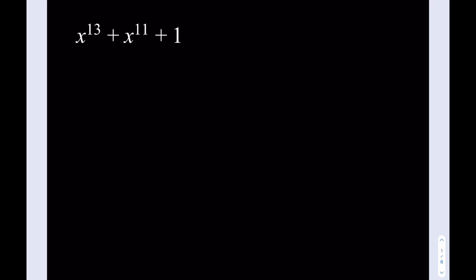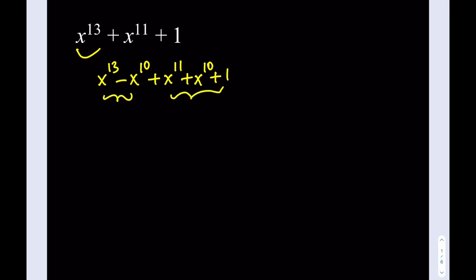I'm going to start by manipulating the x to the power 13. I'm going to write it as x to the power 13 minus x to the power 10. Obviously we don't have x to the 10th power, so we're just going to have to add that one back. So I'll end up with something like this — I have to add back x to the 10th power. If I can factor this and factor this, and they have a common factor, then I'm done.